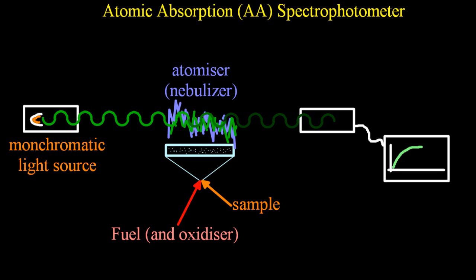Now, some of that light's going to be absorbed by your sample, by the metals in your sample, and detected at the monochromatic detector, which only detects one wavelength of light, hopefully the one that you shot out from the monochromatic light source.